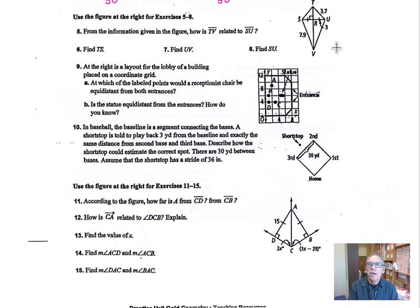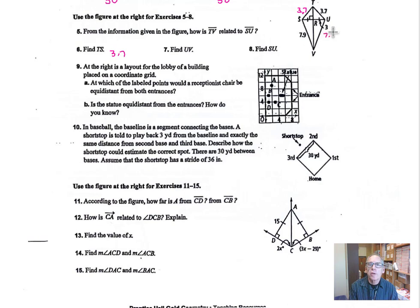Find the value of TS — TS is going to be 3.7. Find UV — UV is going to be 7.9. Find SU: if one part of it is 3, since it's bisected the other part also has to be 3, which gives a total length of 6.